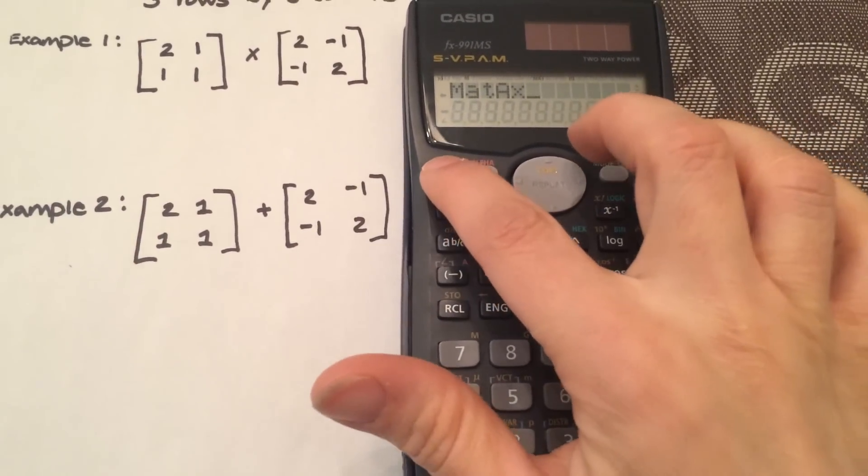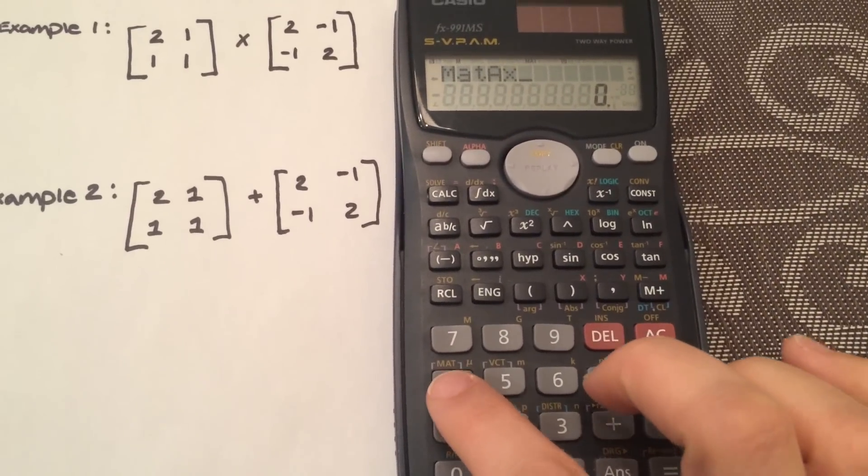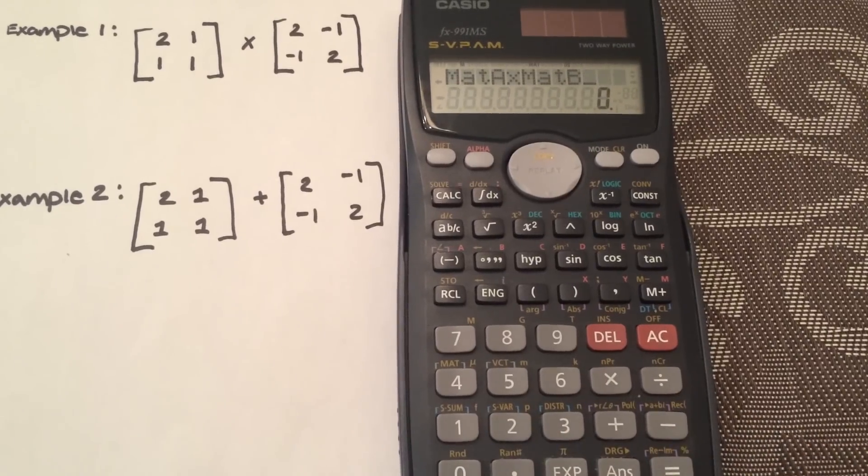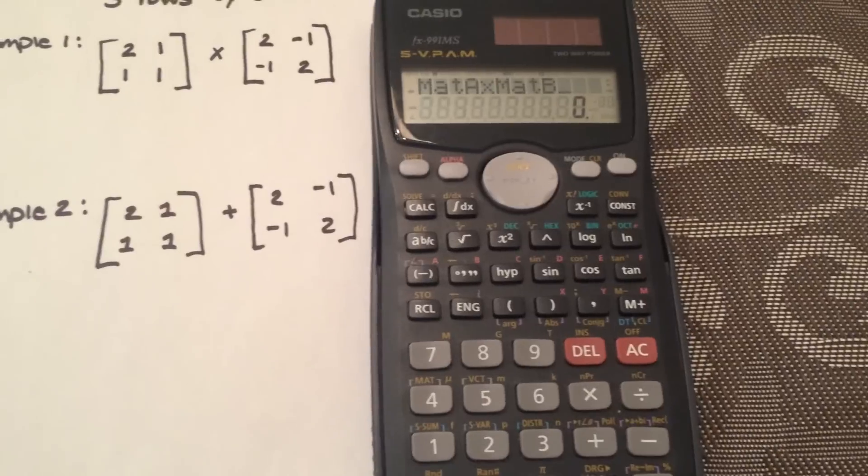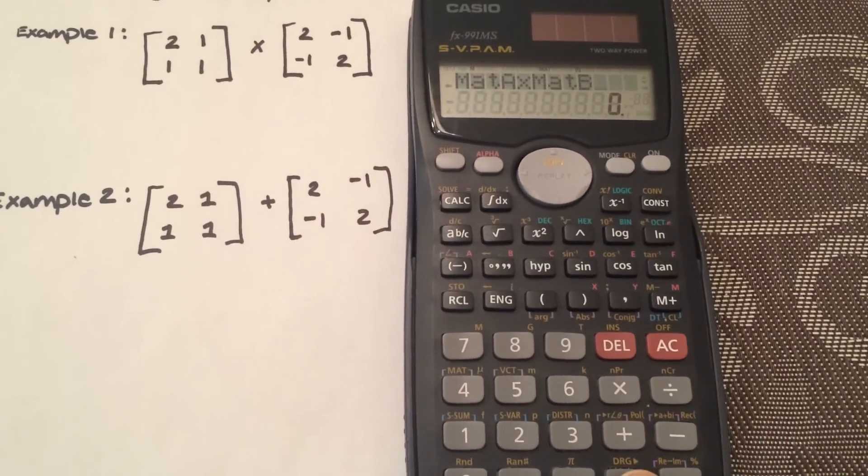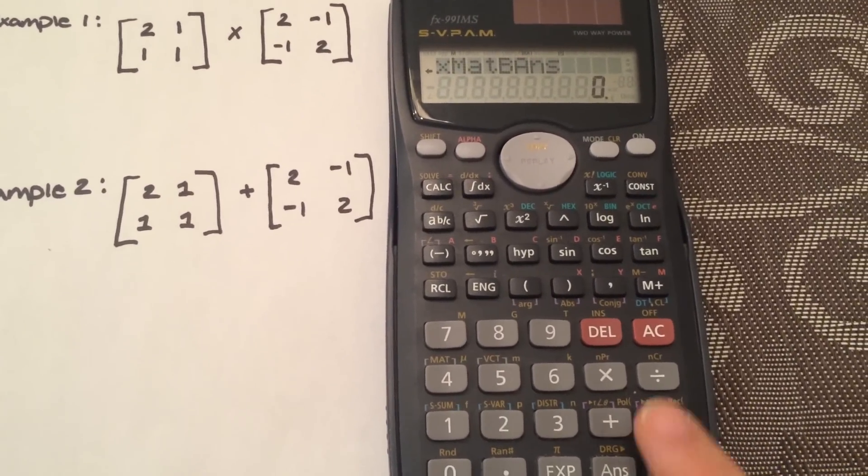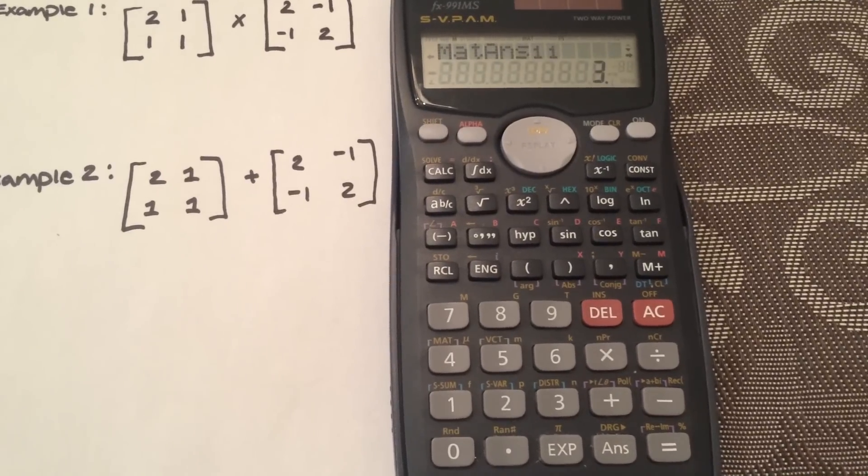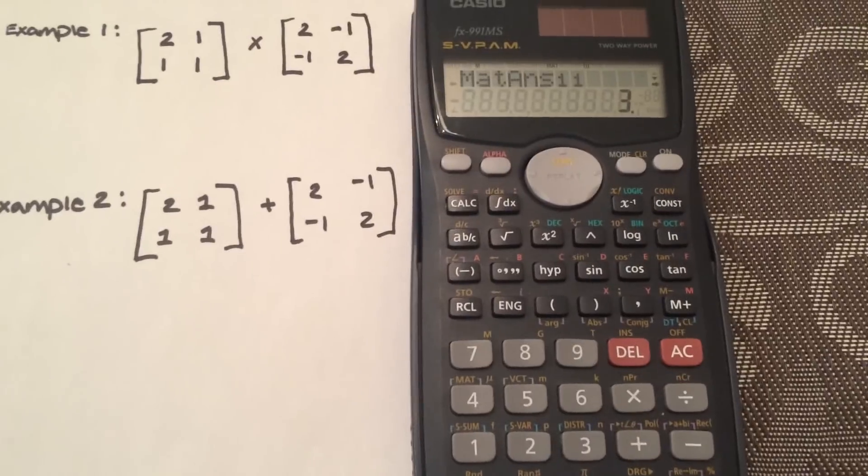And then we're going to do it again. Shift, 4, 3 for matrices. And now we want matrix B. Okay, so it says matrix A times B. It equals. Sorry about that. So just hit equals, and your answer for that is 3.